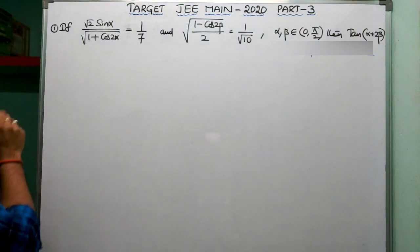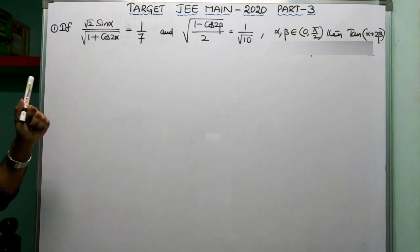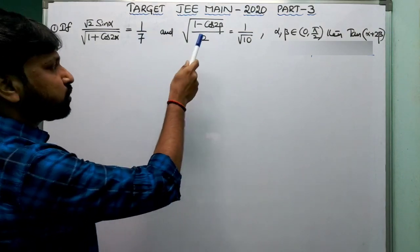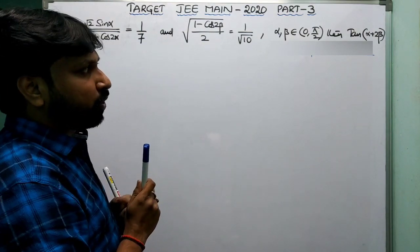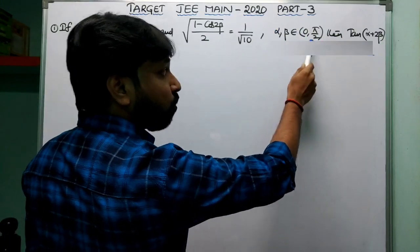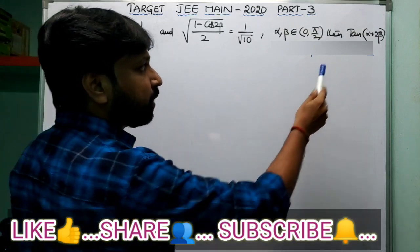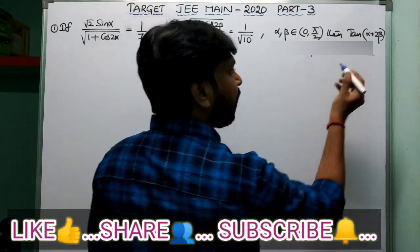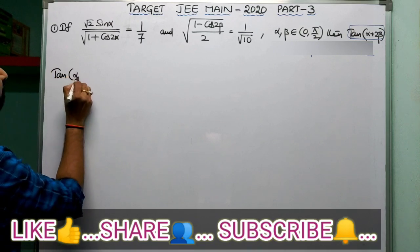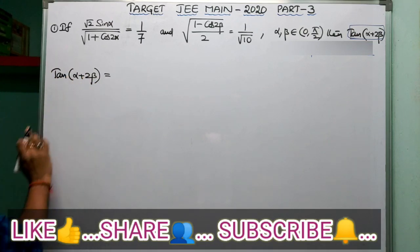Coming to question number one: if root 2 sin α divided by root over (1 + cos 2α) equals 1/7, and root over (1 − cos 2β)/2 equals 1/root 10, with α and β both in the first quadrant (0 ≤ α, β ≤ π/2), then find tan(α + 2β). Let us consider tan(α + 2β) — it is of the form tan(A + B).